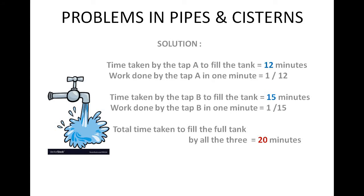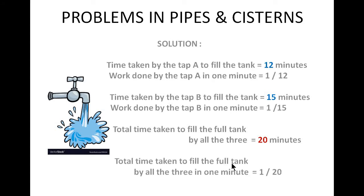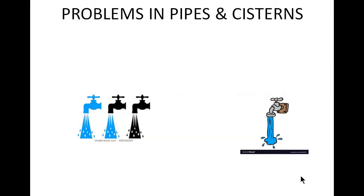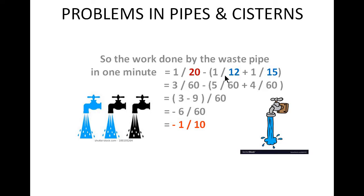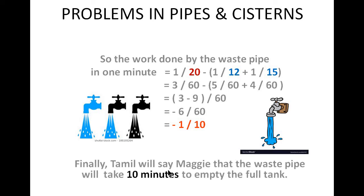We have 1 by 20. Tab A plus tab B equals 1 by 20. If A is equal to 60, so 3 by 16 minus 5 by 16 plus 4 by 16. So 3 minus 5 by 16, which gives minus 6 by 16, equals 1 by 20. Then we add the value, giving minus 1 by 20.